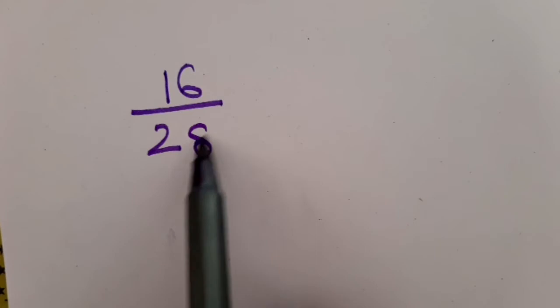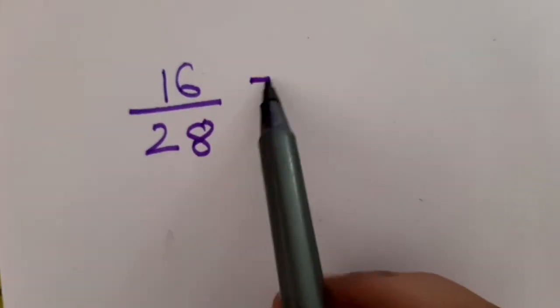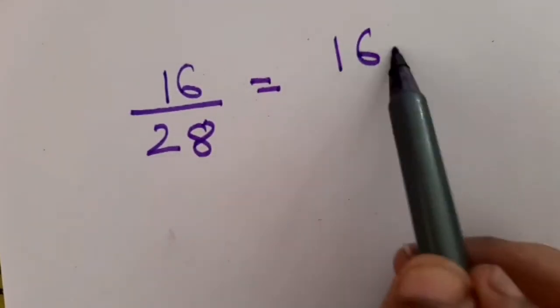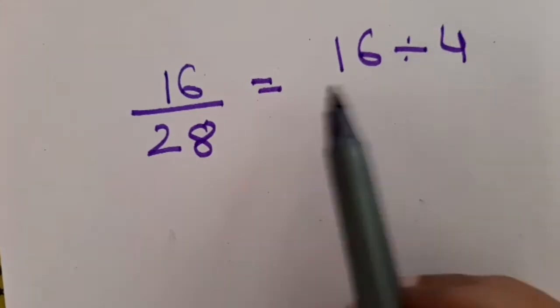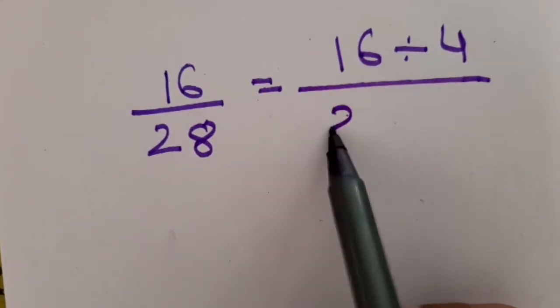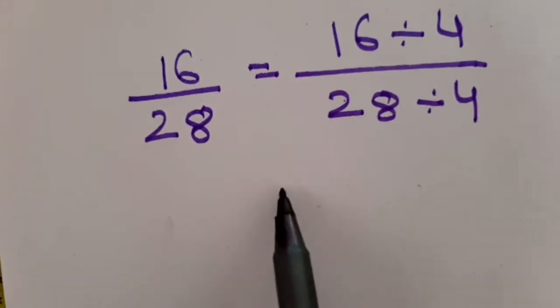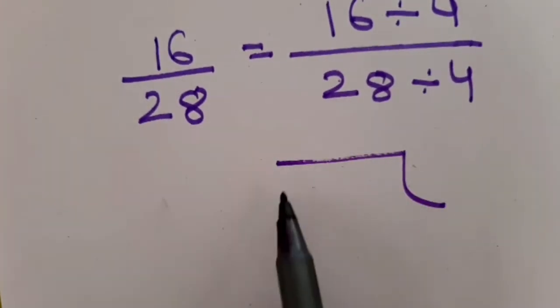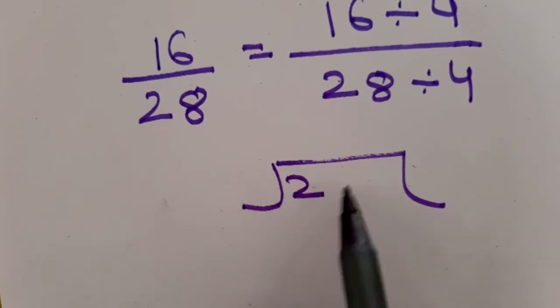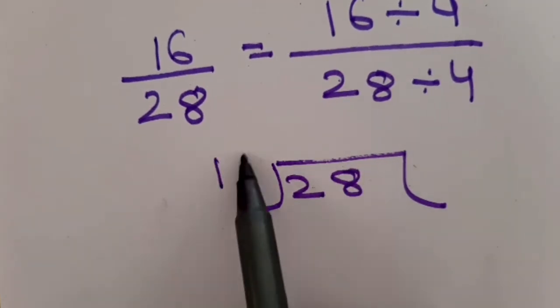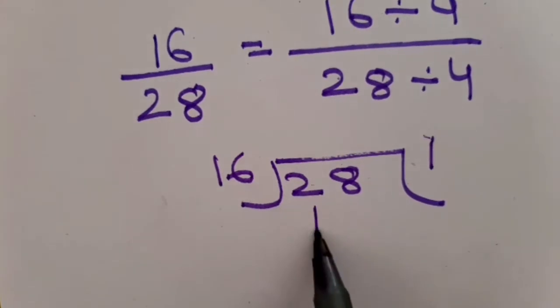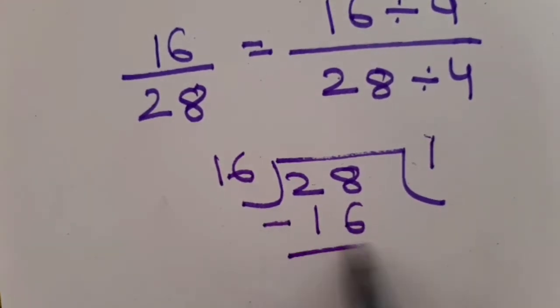You can use any of the methods to find out the HCF — the common factor method or the division method. I will show you one example of how to find out the HCF again using the division method. Here I am dividing these two numbers: 16 ones are 16.